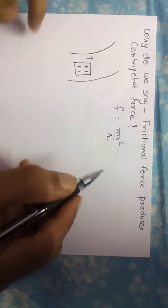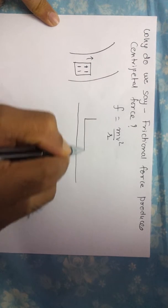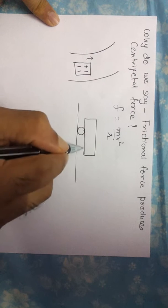Let's take a simple example first. This is a road, and this is a vehicle moving on it. These are the two wheels of the vehicle.